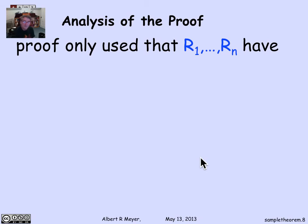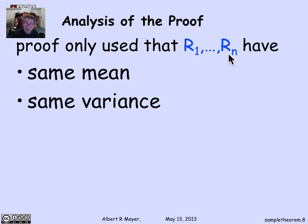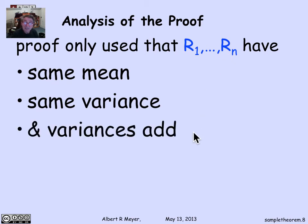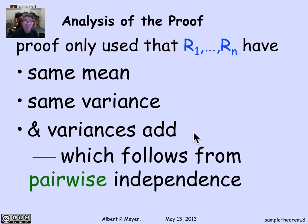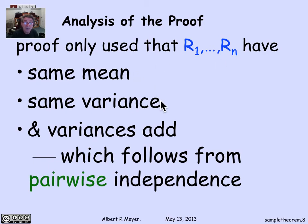Now, if we go back and look at this proof, the only thing that it used about the r's was that they had the same mean mu, and they actually had the same variance sigma squared, and that the variances added. That was the key step in the proof, that the variance of the sum of the r's was equal to the sum of the variances. Now, additivity of variances only requires pairwise independence. It didn't even require the hypothesis that they were mutually independent. And it didn't require that the r's had the same distribution, that they need not be identically distributed. It was sufficient that they have the same mean.